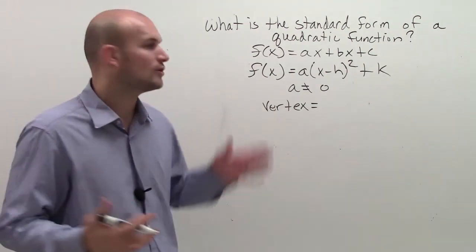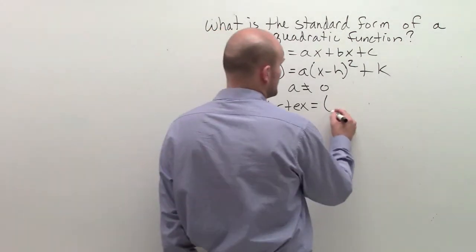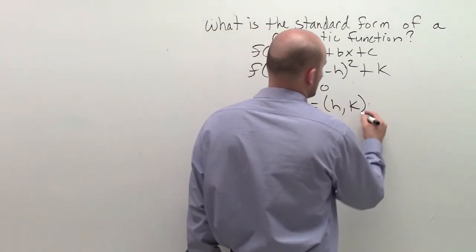First of all, and most important, why we love the standard form is it tells us exactly what the vertex is. The vertex is going to be h comma k.